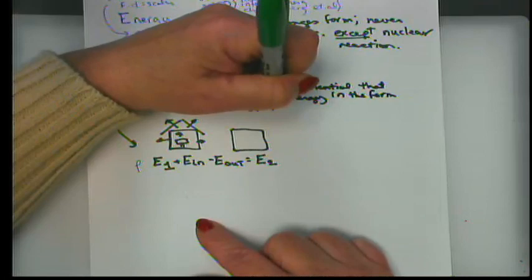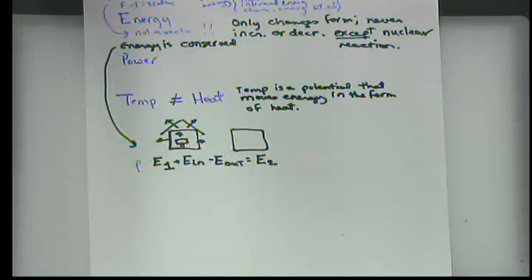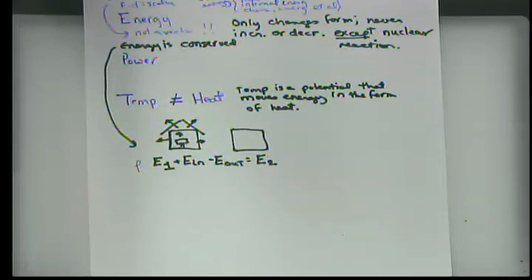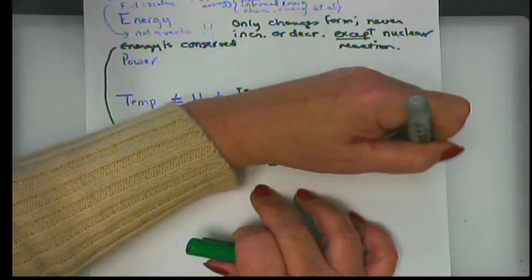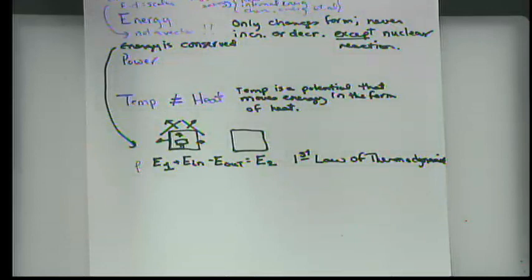So temperature is a potential that can move energy in the form of heat. In winter, your house is hot and outside is cold, so heat moves outward. In summer it reverses. The conservation of energy principle is actually the First Law of Thermodynamics. The first law is necessary — we must satisfy it in every instance — but it is not sufficient because it doesn't tell us which direction the energy moves.